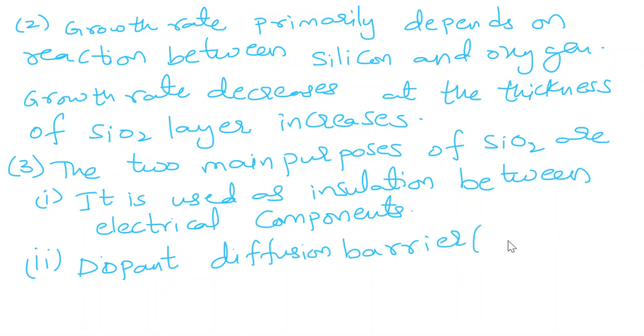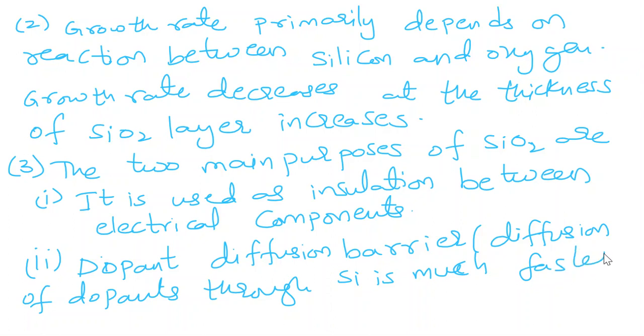The diffusion of dopant through silicon is much faster than that of SiO2. Hence, SiO2 can be used as a dopant diffusion barrier.